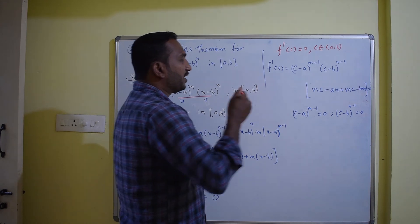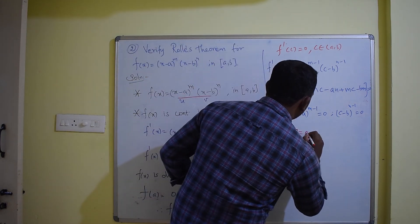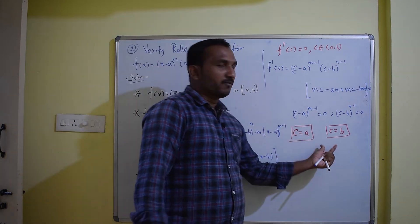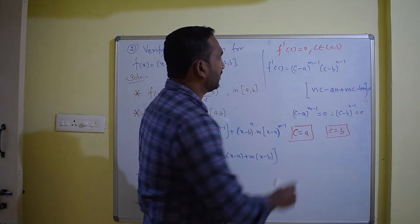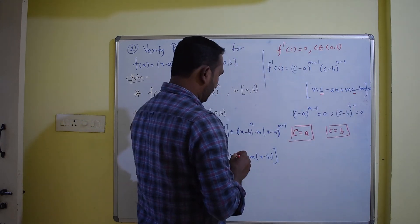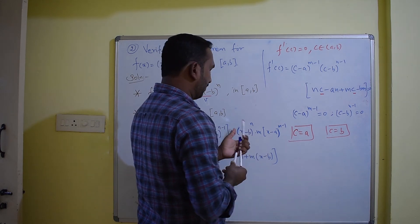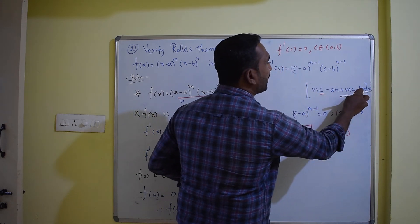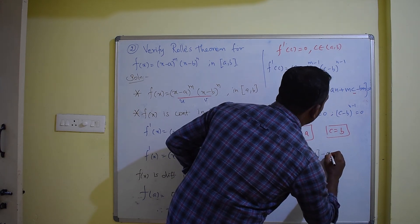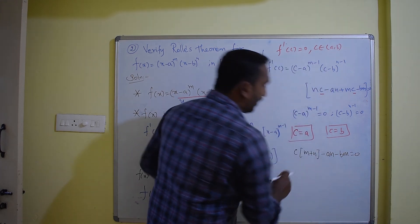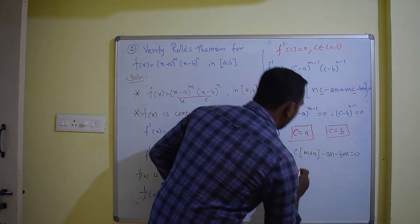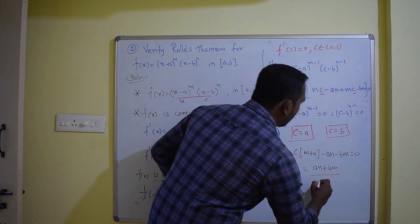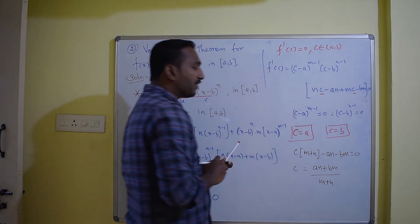Now, solving the remaining bracket: n(c minus a) plus m(c minus b) equals 0. Taking c common gives c(m plus n) minus an minus bm equals 0. Solving for c, we get c equals (an plus bm) divided by (m plus n). So we have three values for c.